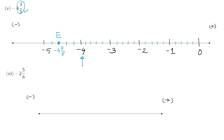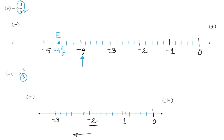The next question is minus 2, 5 by 6. We place 0, minus 1, minus 2, and minus 3, then divide each section into six equal parts. Minus 2 is located, and since the point lies before it, we check the left hand side of minus 2. It is the fifth division out of six equal divisions. We name it point F, the location for minus 2, 5 by 6.